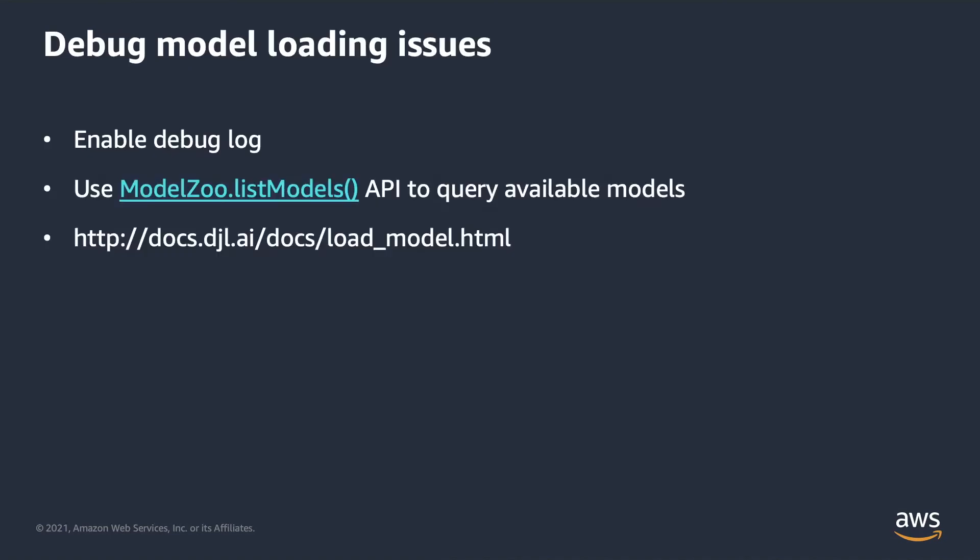If you encounter a model not found exception, you can enable the debug log to see how the model is being loaded. You can also use the ModelZoo listModels API to query available models and their properties. Troubleshooting details can be found in the DJL documentation.